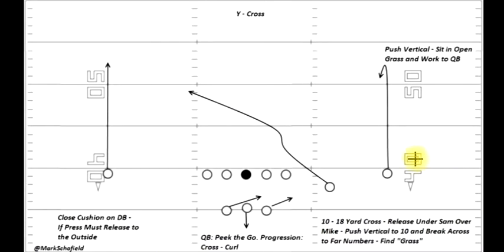Finally, let's look at the Z receiver running this sort of backside curl. He will push vertically and then sit in the open grass and try to work back to the quarterback. The quarterback's responsibilities on this play: first, he's going to peek the go route — take a quick look at that vertical route from the X receiver and see if he can make a quick play in the vertical passing game. If that isn't there, his next read is that crossing route from Y. Try to find him in some open space near those numbers, which should be vacated by that playside cornerback. Finally, if that's covered, he comes to the third read, which is that deep curl pattern run by Z.